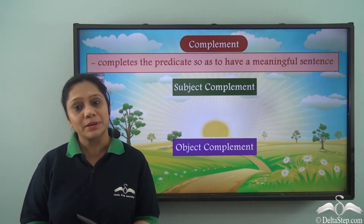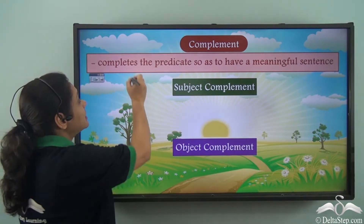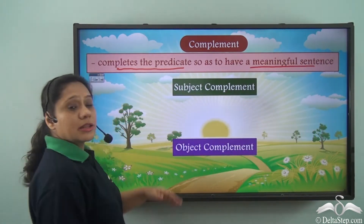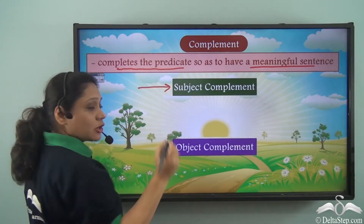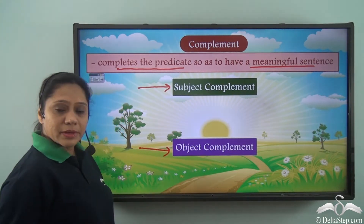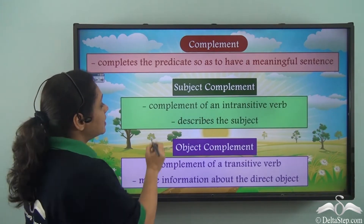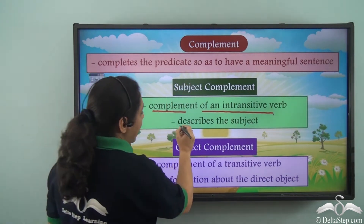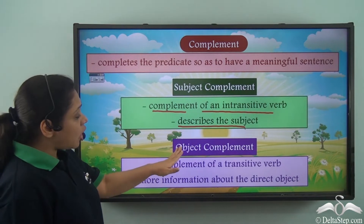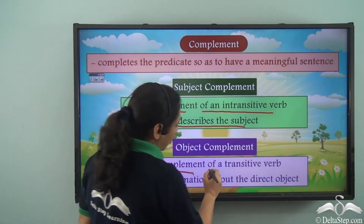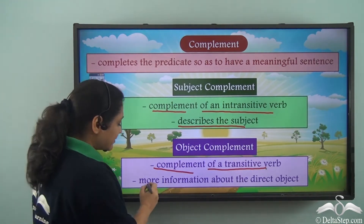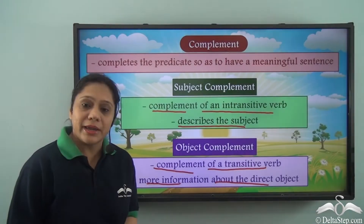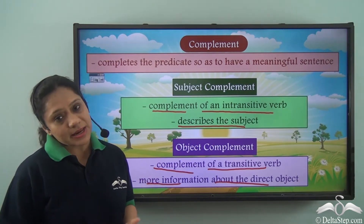We have already learnt about complements and we know that a complement completes the predicate so as to have a meaningful sentence. A complement can either be a subject complement or an object complement. The complement of an intransitive verb is known as the subject complement as it describes the subject. The object complement is the complement of a transitive verb and it gives us more information about the direct object in a sentence. Today we will revise our concept of complements with various examples.